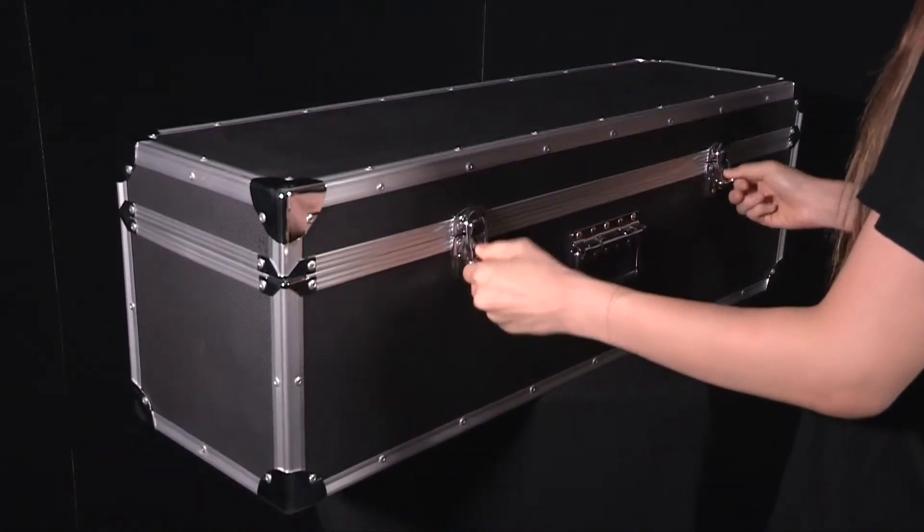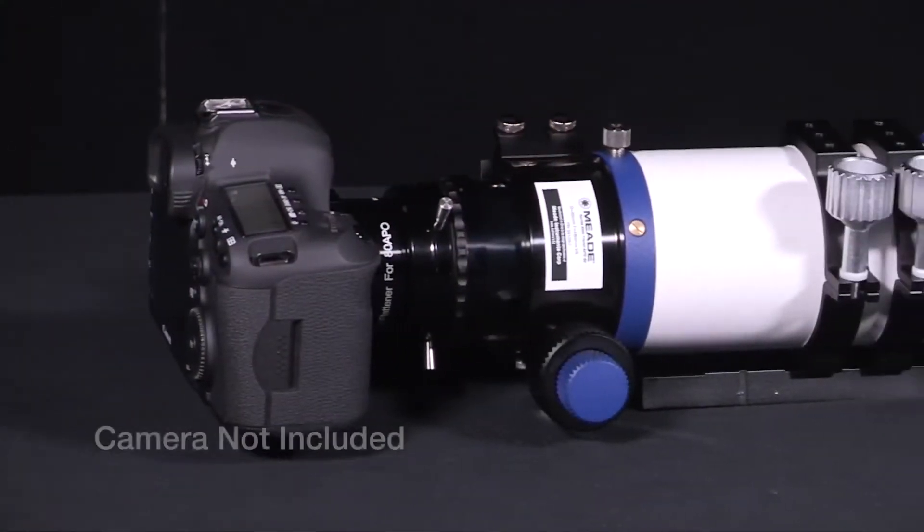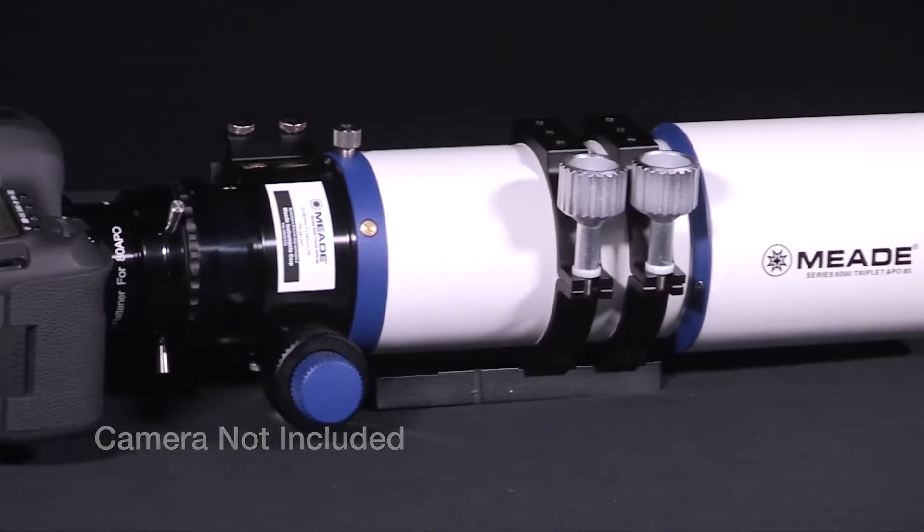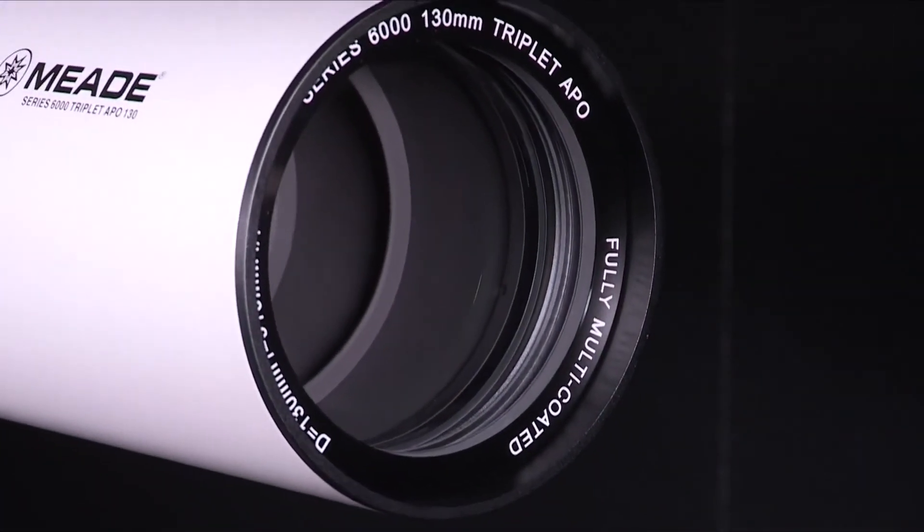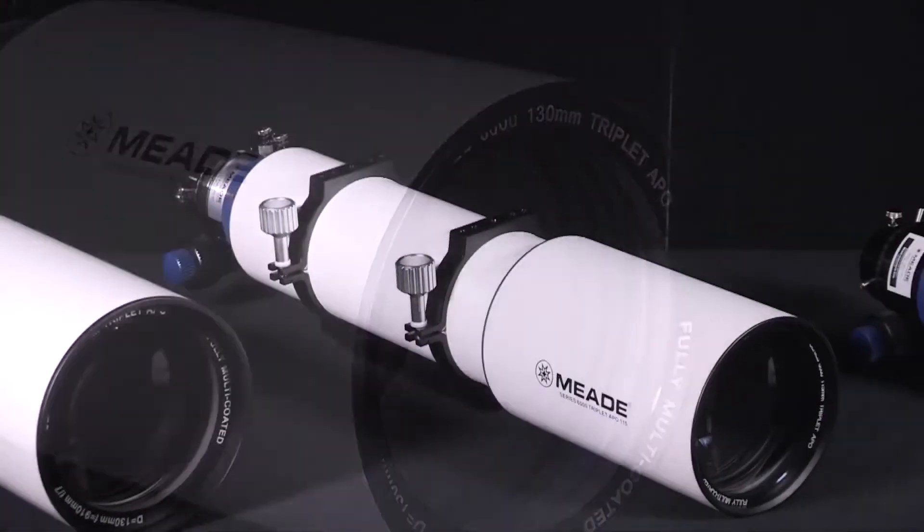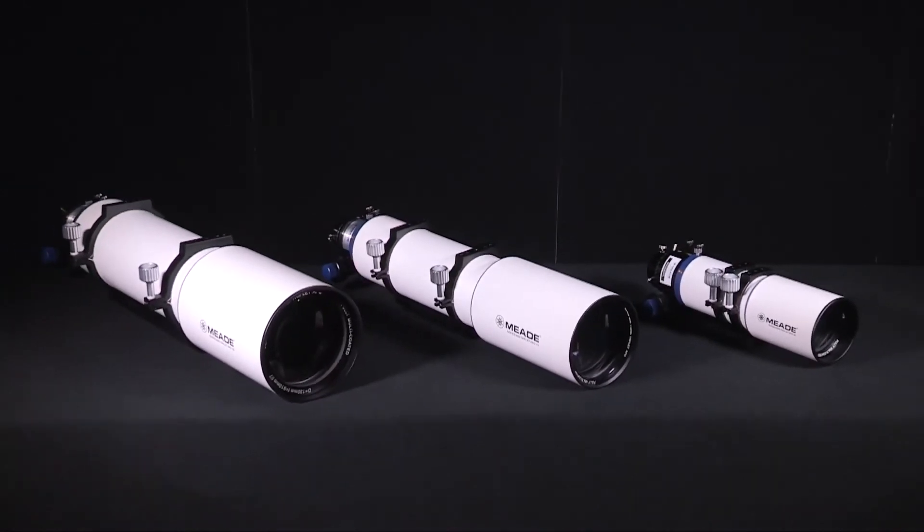These telescopes will fill the need of the most discerning astronomer. For crisp wide-field observing and imaging, nothing can beat a true three-element apochromatic refractor. The Series 6000 triplet APOs are among the finest available optically at any price.